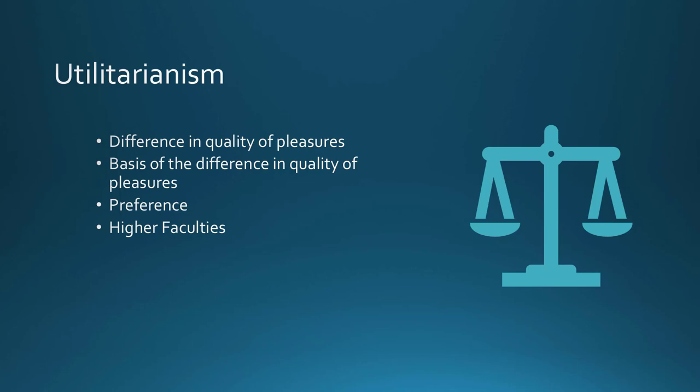So why would people pick human pleasures over animal pleasures? Running his test: if you have someone who can appreciate both — what Mill would consider the finer things, but also the swinish things — Mill claims, as a matter of empirical fact, that few humans would consent to become an animal even if they get the foolish pleasures. They wouldn't give up their greater qualities for the complete satisfaction of the lesser desires.